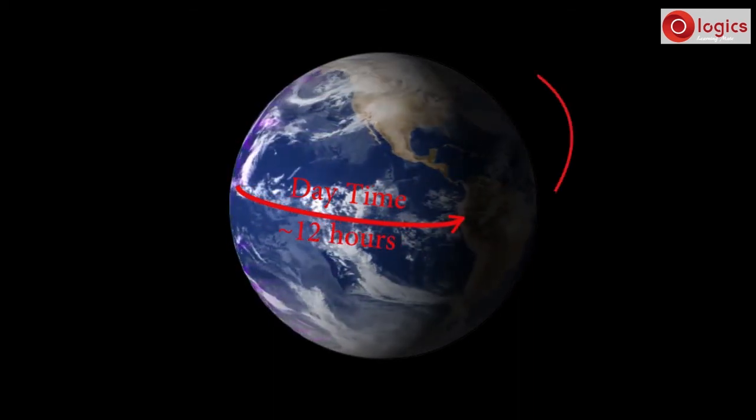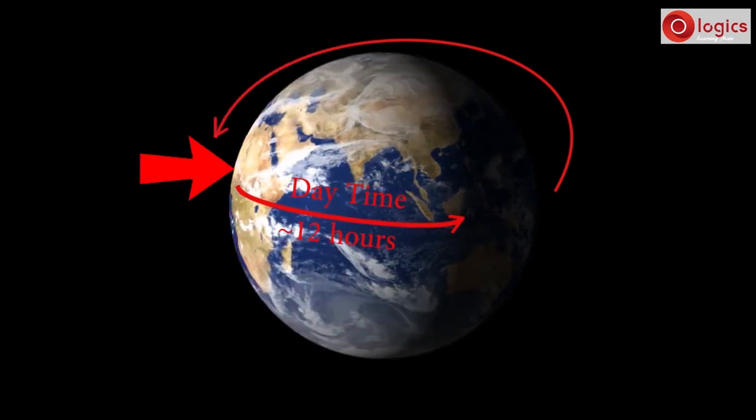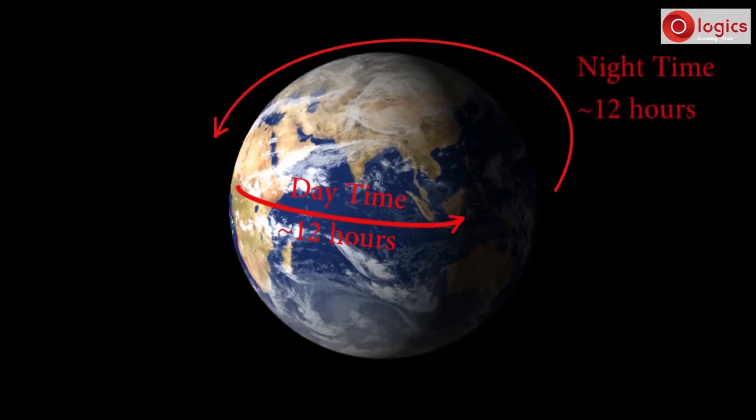Now this region rotates for 12 hours to come back to here, completing night, which means night time is approximately 12 hours. Observe, Earth completed one rotation.